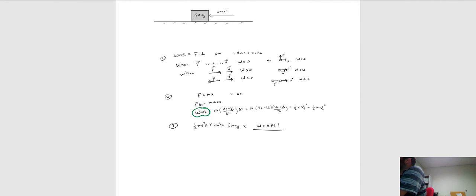Looking at Newton's second law — net force equals mass times acceleration — if we multiply both sides by delta x (some change in position, in a one-dimensional sense), the left-hand side becomes the work done on an object, because force times delta x is a work term.